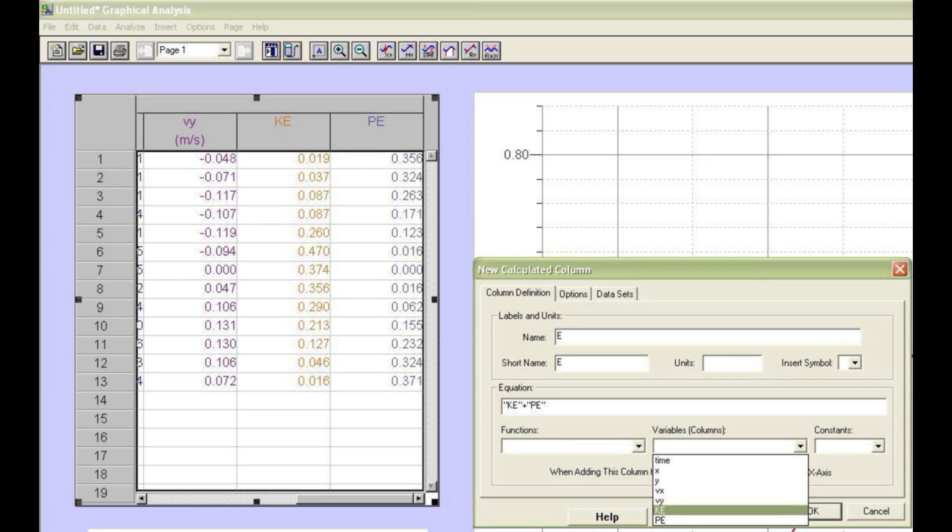Finally, the total mechanical energy per unit mass is the sum of the kinetic and potential energy contributions.